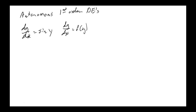Falling bodies: d²s/dt² equals minus g — t not involved, but that's second order. Falling bodies with air resistance: m·dv/dt equals mg minus kv — no t on the right-hand side, autonomous. Suspended cables: dy/dx equals w/T₁ — no x involved. So most of those examples were autonomous first order differential equations.